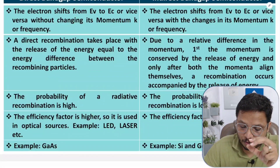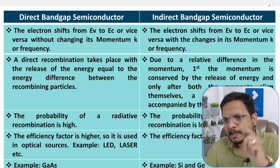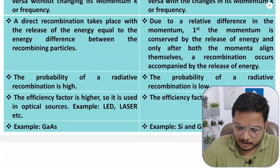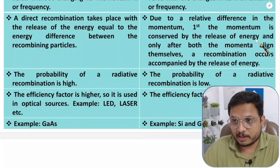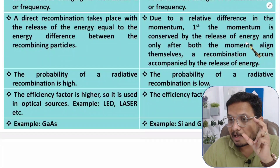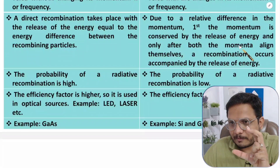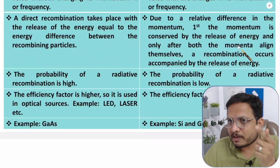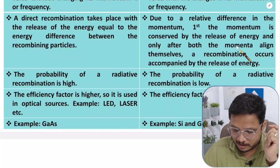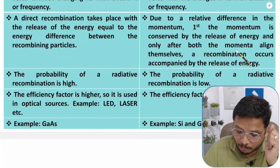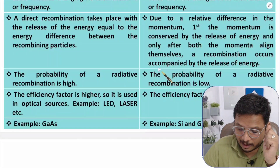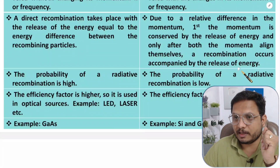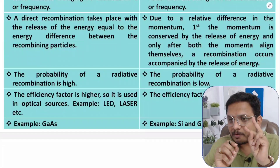When it comes to indirect band gap, due to the relative difference in momentum, first the momentum is conserved by the release of energy. So first there will be momentum conservation, and that will be done with the release of energy. Only after both momenta are aligned can recombination occur, accompanied by the release of energy. So here there are two things happening: first, momentum conservation, and then recombination.